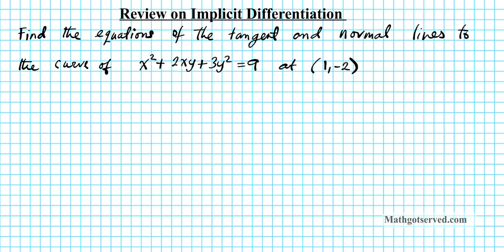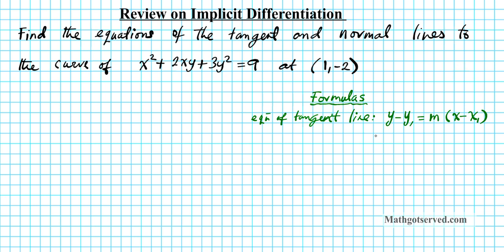Before we start, let's go over the formulas we're going to be using. The formula you need to know is basically an Algebra 1 formula — the equation of a line — combined with calculus. For the equation of the tangent line, that's given by y minus y1 equals m times (x minus x1), where m equals dy/dx evaluated at the point (x1, y1). You find the slope at that point by implicitly differentiating the function and plugging it into point-slope form.